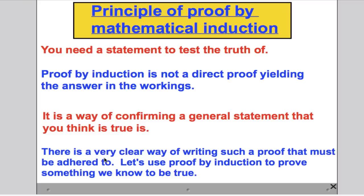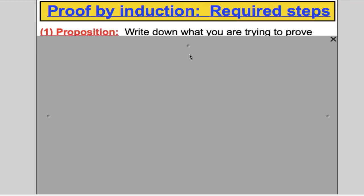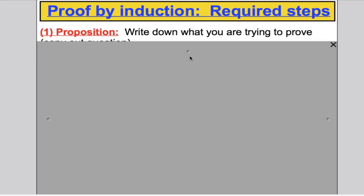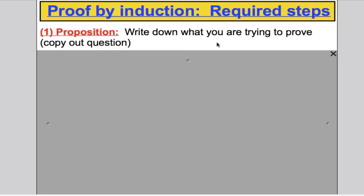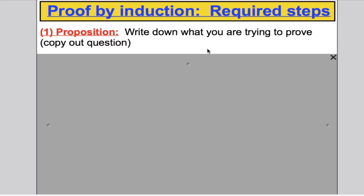You must use the terminology I use and write it out very neatly. There is no jumping steps with induction — there is a very formulaic way of doing it. Let's start off and do a proof by induction. Take down these notes of the steps: the first step is called the proposition, where you write down the thing you are trying to prove. Effectively, you copy out the statement or the question you're trying to show.